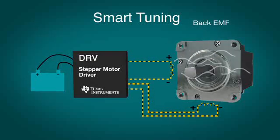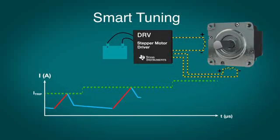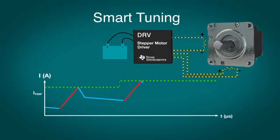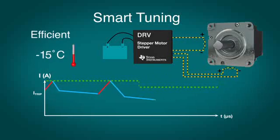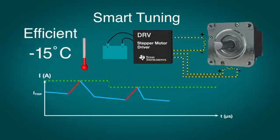Cycle-by-cycle, the decay mode is automatically optimized to maintain current regulation, keeping the motor running smoothly, quietly, and up to 15 degrees C cooler than using a fixed decay mode.